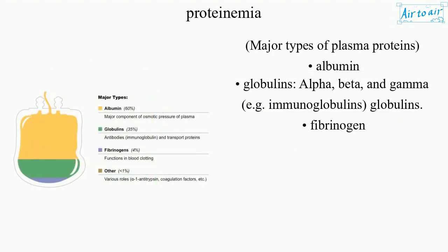Major types of plasma proteins: albumin; globulins — alpha, beta, and gamma — including immunoglobulins and globulins; and fibrinogen.